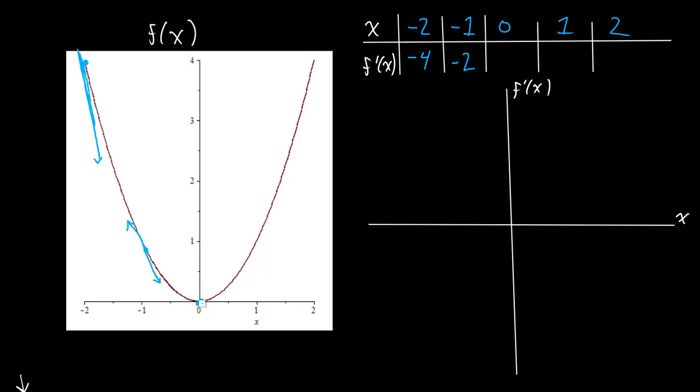Now the real important one to get is here. What's the slope at x equals 0? Well, let's draw my tangent line and kind of see. You know what? It looks like the slope of this tangent line is 0, so my output should be 0 there as well.